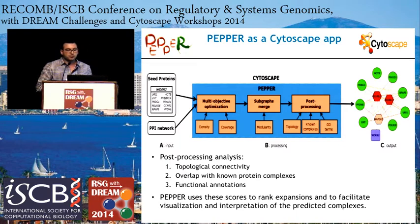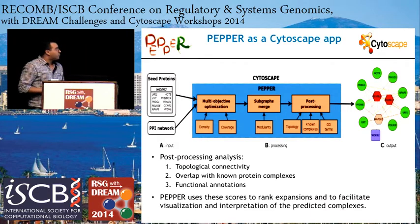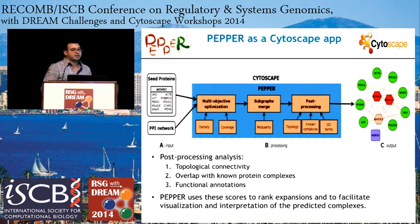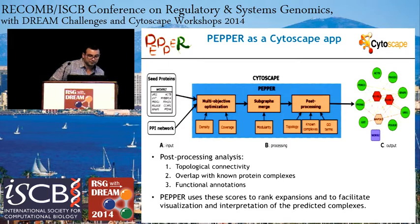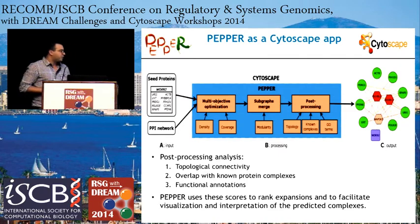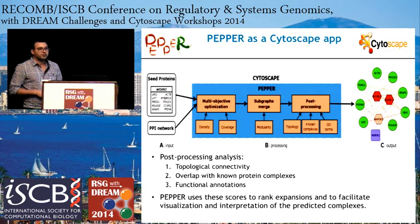Motivated by these results, we developed PIPER as a Cytoscape application. The input is a list of seed proteins and a PPI network. The core pipeline involves three main steps: the first two perform subgraph extraction, and a third step handles post-processing, which computes scores using graph topology, known complex matching, and functional annotation. PIPER uses these scores to rank expansions and facilitate visualization and interpretation of predicted complexes.